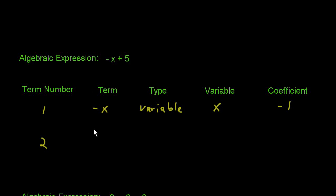The second term is the constant 5. And we just said what it is. It's a constant. And constants don't have variables or coefficients, so we can just leave those two spaces blank.